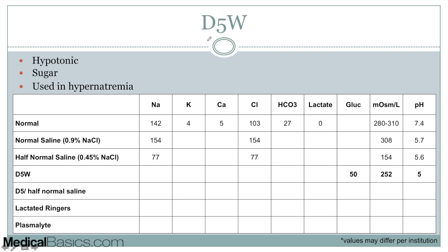The next thing is D5W, and this is literally just sugar water. The only component it's made out of is glucose. Its osmolality is a little bit less — slightly hypotonic compared to our extracellular fluid — and the pH is still acidic. One of its uses is for hypernatremia, and the reason why is because it doesn't have any sodium. Just like half normal saline, it makes sense that we can use D5W for the treatment of hypernatremia.